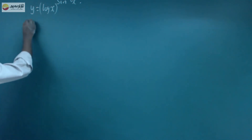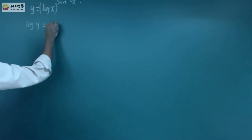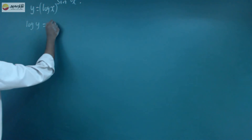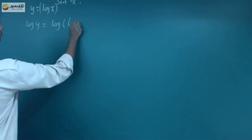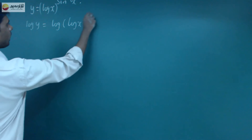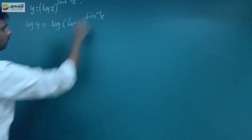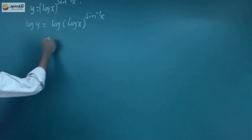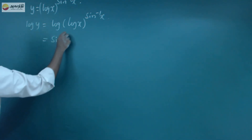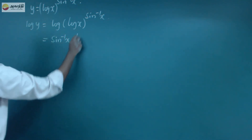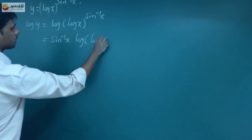Take log on both sides, so that is log y is equal to log of log x power sin inverse x. By the log property, bring sin inverse x to the front, so that is sin inverse x times log of log x.